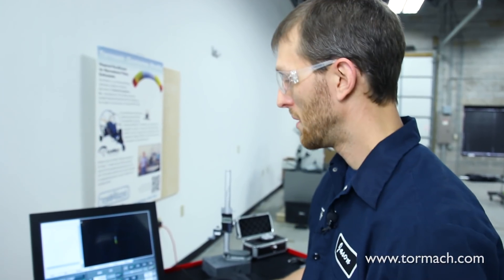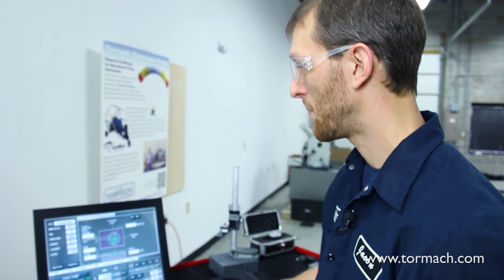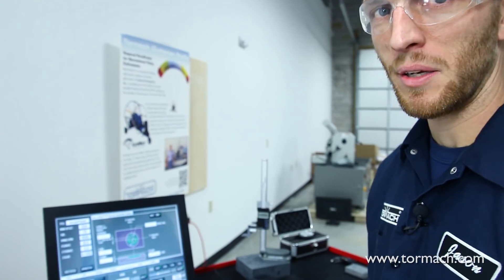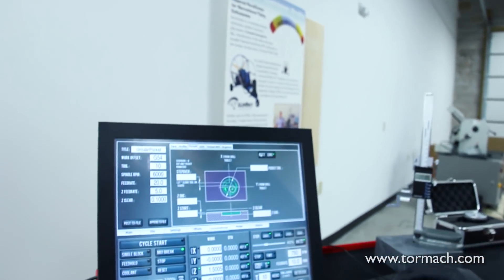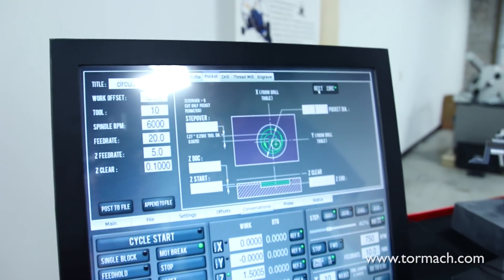To do this we're going to use our conversational routines that are built in PathPilot. So we'll jump to the conversational tab. The first one we're going to look at is a pocketing routine. You can see we have options here to do rectangular pocketing and circular pocketing.